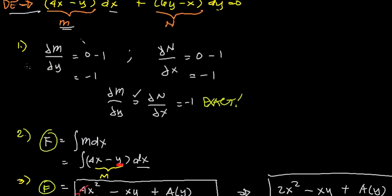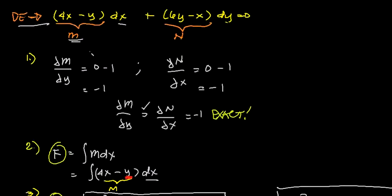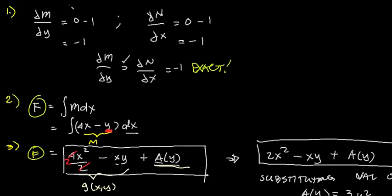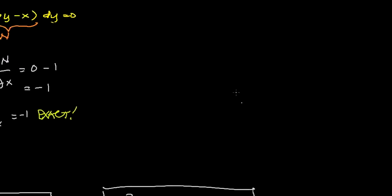So of course the first step is just the same - test for exactness. So for step 2, instead of this, we will let f equal the integral of, instead of N dx, we now let N dy. So we have, where can I write this?